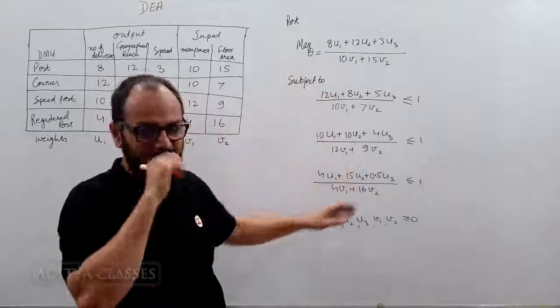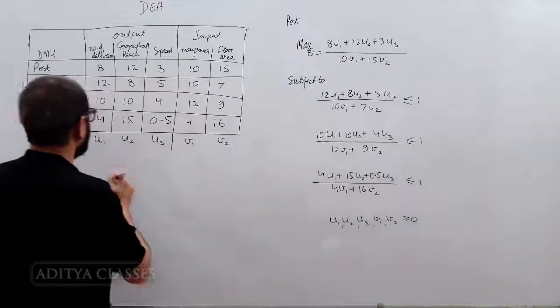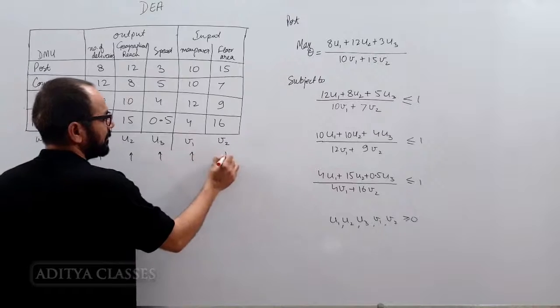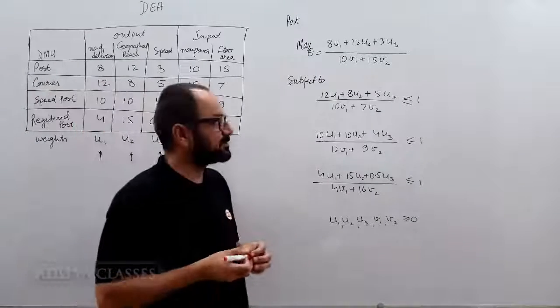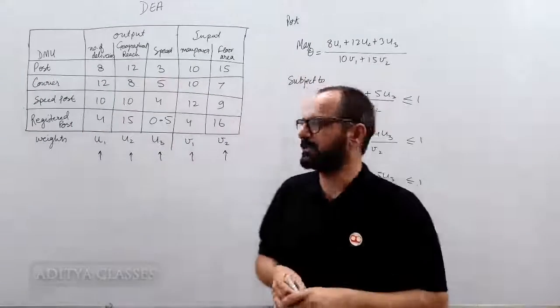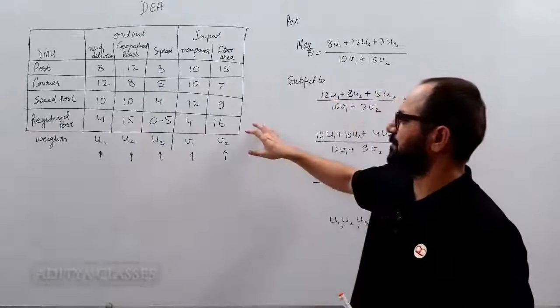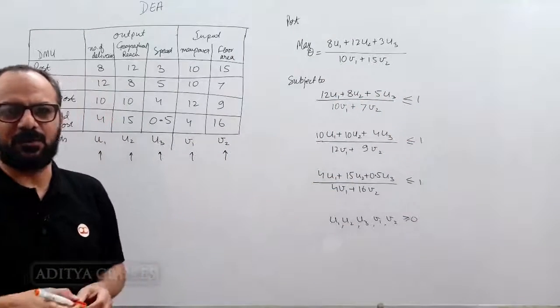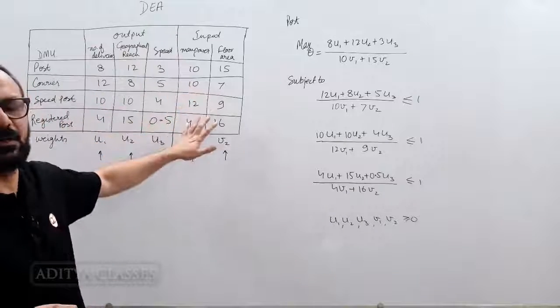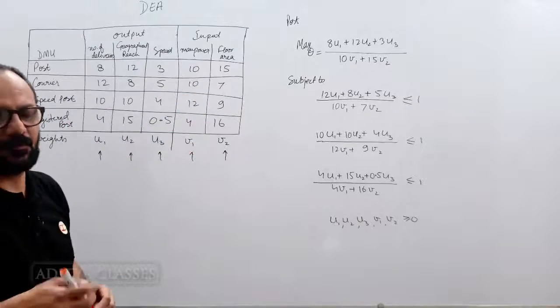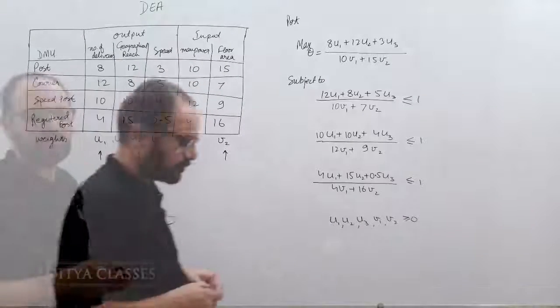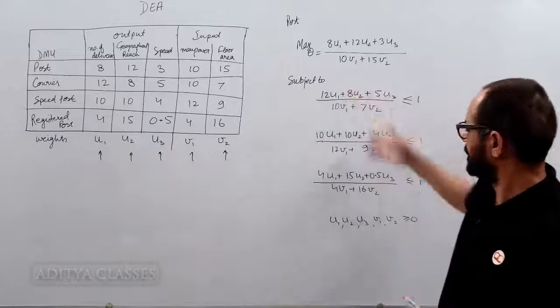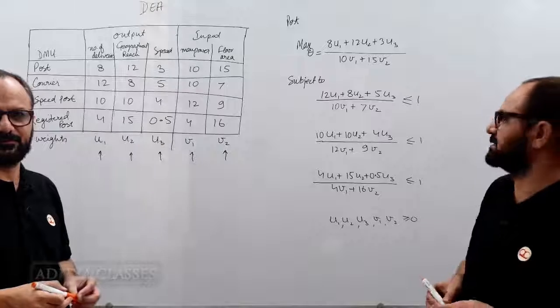Now the problem is: what should these u1, u2, u3, v1, and v2 be such that this condition is met? This is an example we will be taking forward, discussing in the videos coming up where we will be solving this model, this particular model using DEA for Excel. We will be using that plugin and solving these weights using DEA solver for Excel.